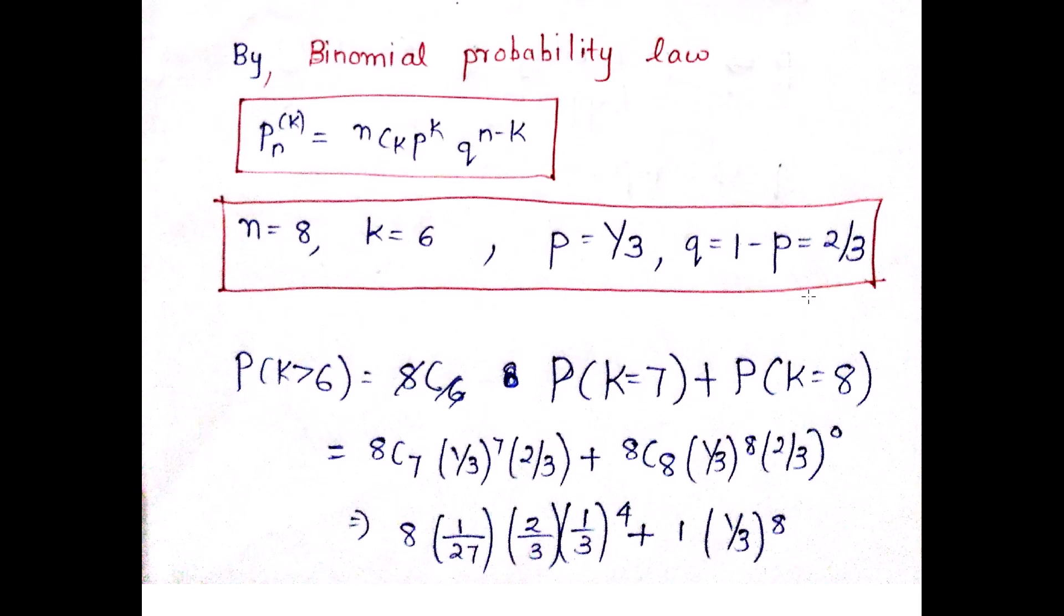So what is the probability of P(k > 6)? That is equal to P(k = 7) and P(k = 8). So nCk, where n is the total number of trials and k is the number of success in that. So the number of success can be 7.